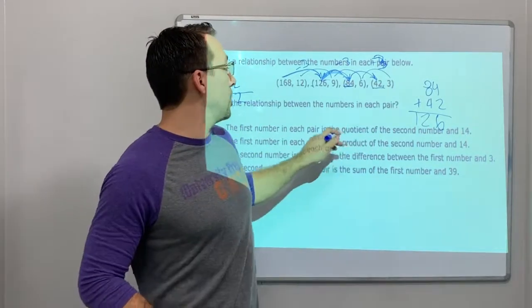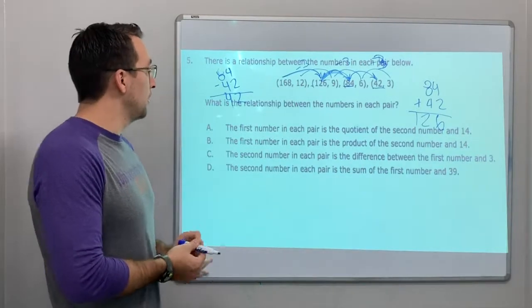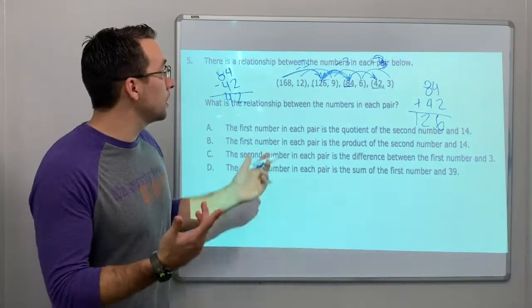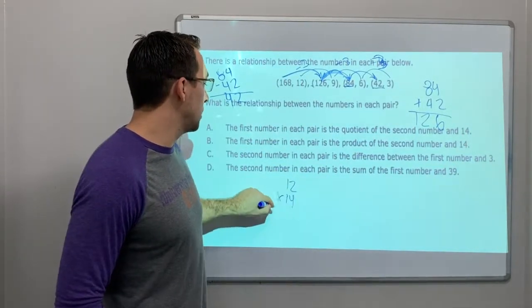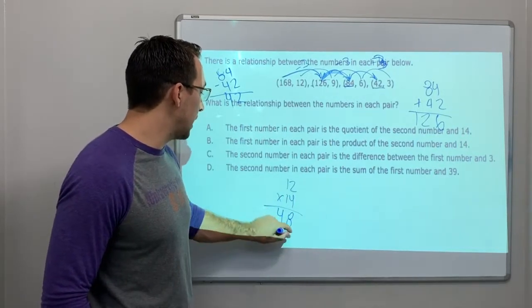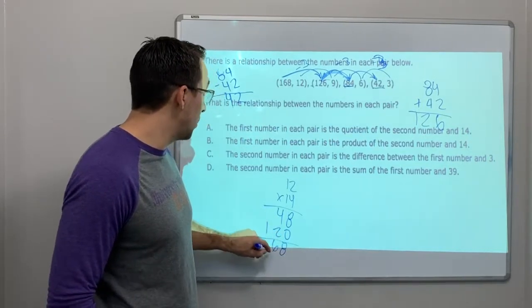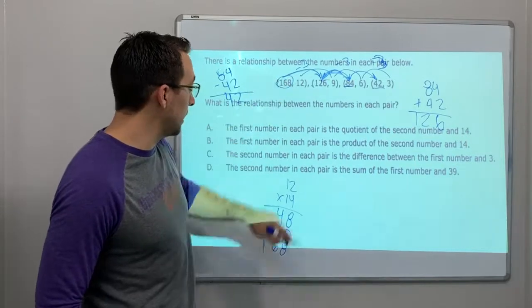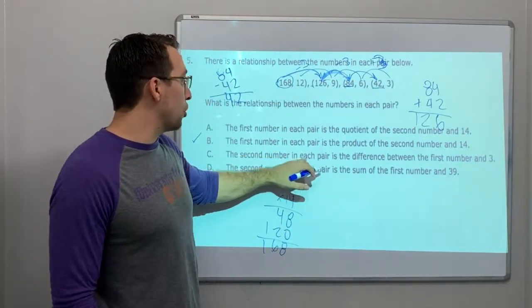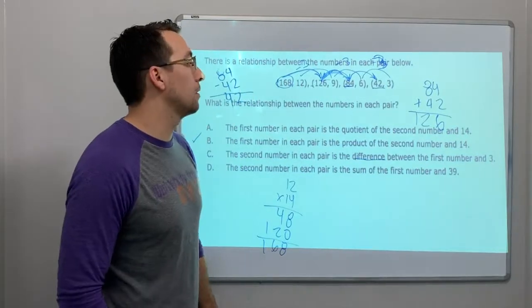The first number in each pair is the quotient of the second number and 14? The first number in each pair is the product of the second number times 14? Well, let's do that. What's 12 times 14? Is 48. Add a 0, 1 times 2 is 2, 1 times 1 is 8, 6. Oh that is incorrect.